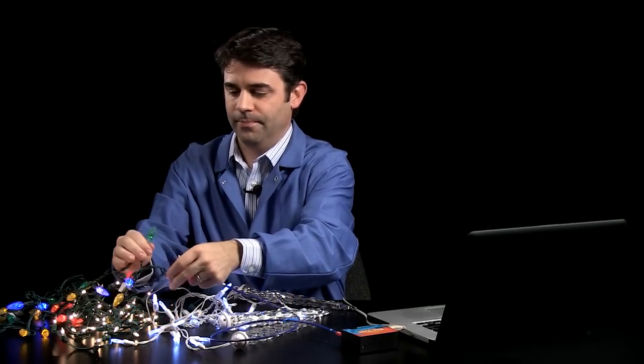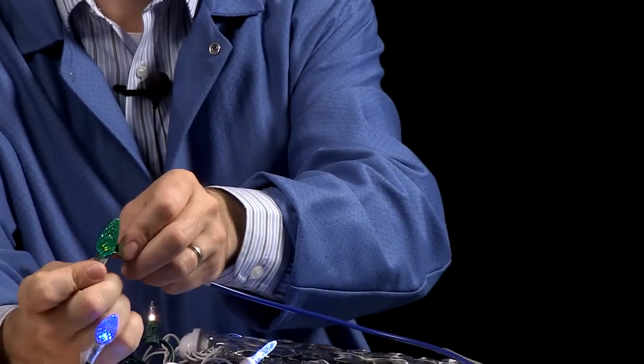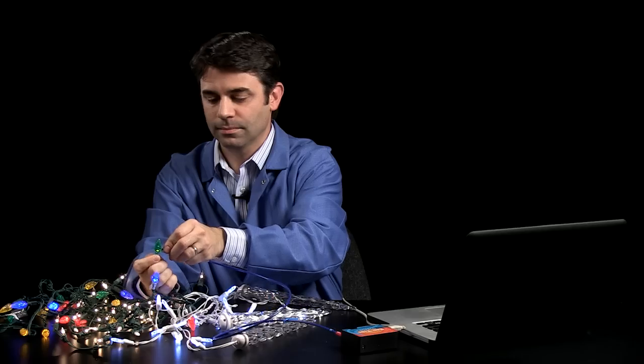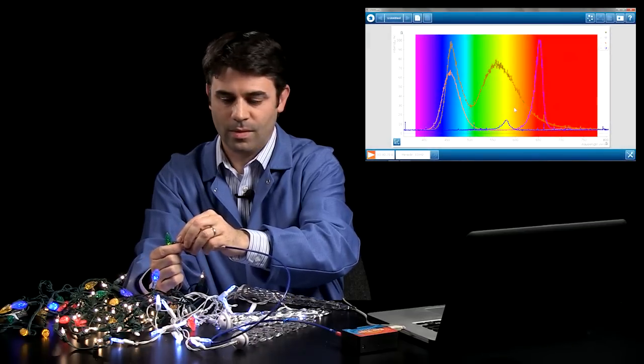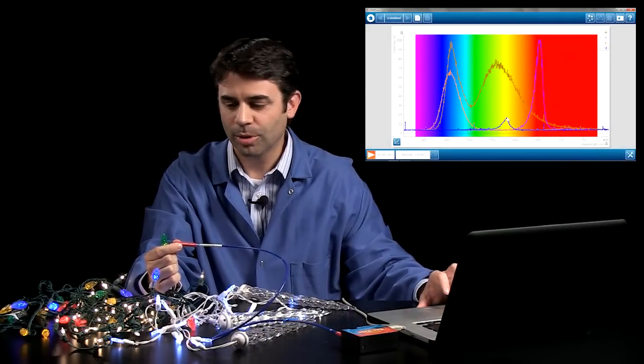And finally, a green LED. Also not very intense. And also very much in the yellow part of the spectrum. These two bulbs might be very similar.